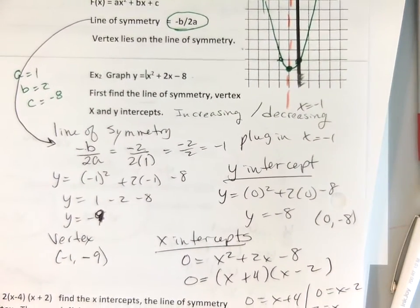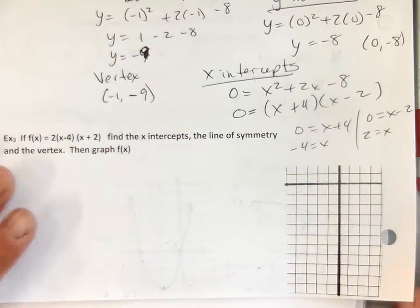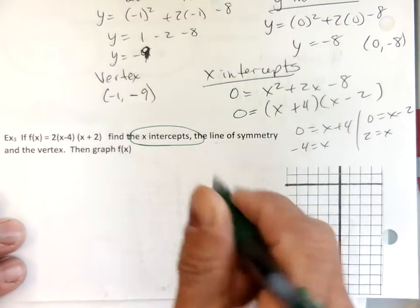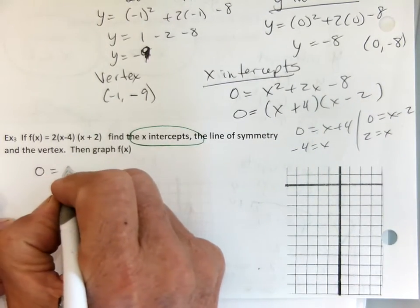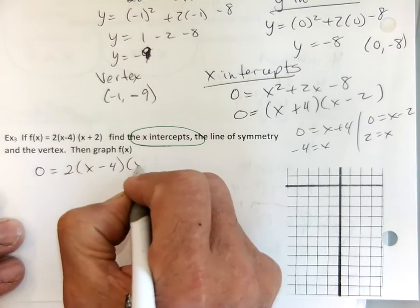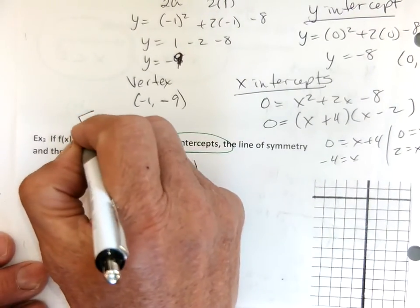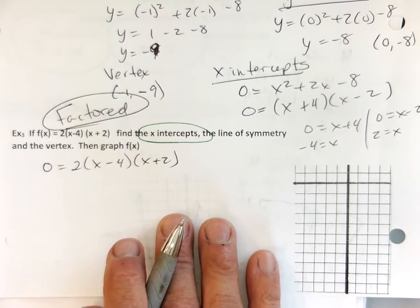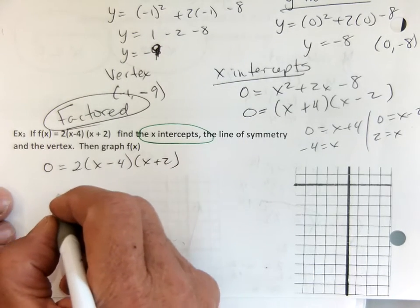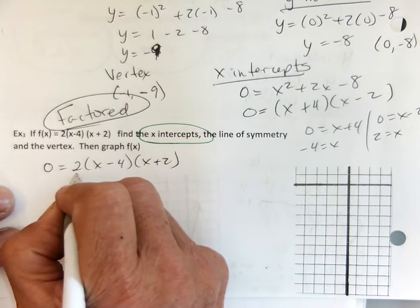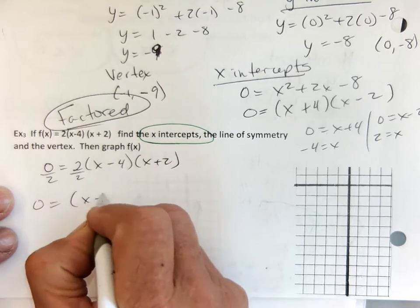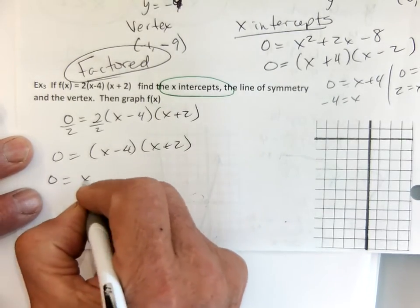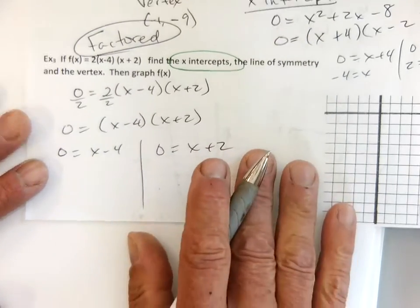Now the last one is the easiest — it's already in factored form. So let's find the x-intercepts first. If it's already in what we call factored form, then we can get the x-intercepts pretty easily. I'm going to make my mini equations. First of all, I'm just going to get rid of the 2 — divide by 2, divide by 2. I don't need the 2.